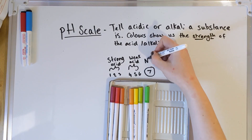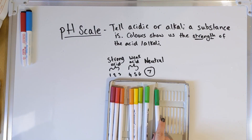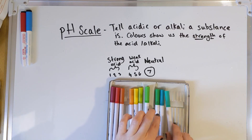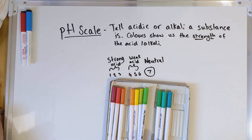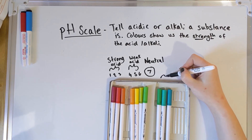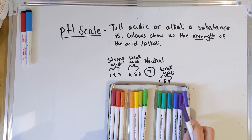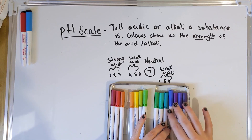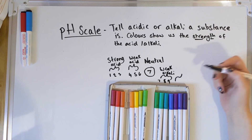pH 7 means neutral — it's not an acid or an alkali. Going into the alkalis, pH 8, 9, and 10 are a bluish-greenish color, getting into blues — these are weak alkalis. Then the last part of the pH scale, 10 to 14, are your strong alkalis — things like bleach and household cleaner.